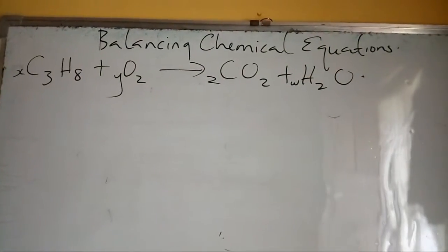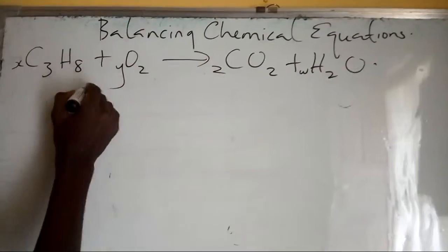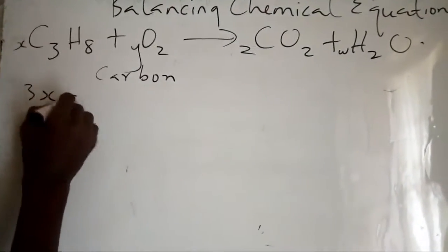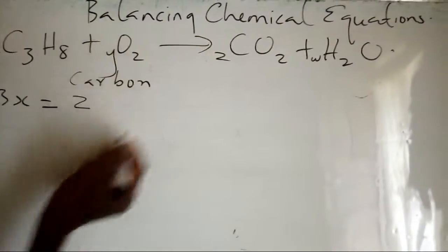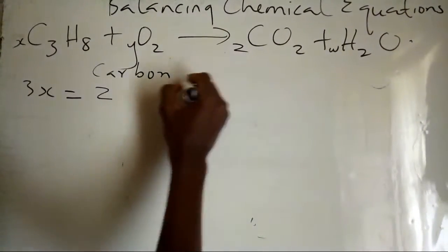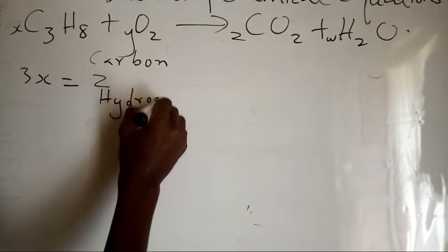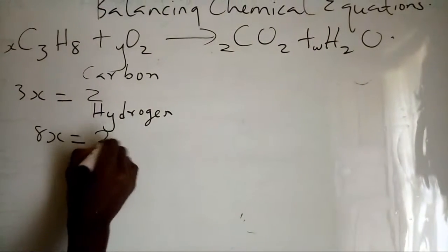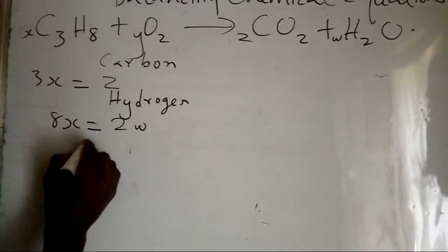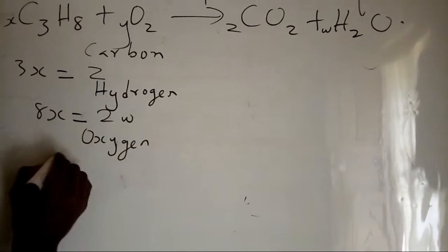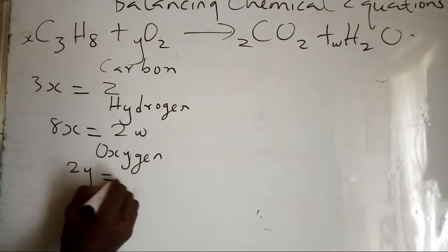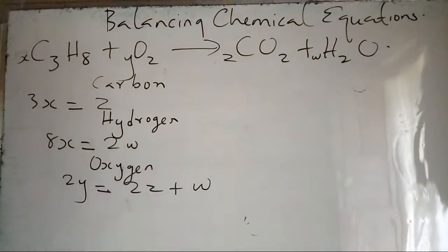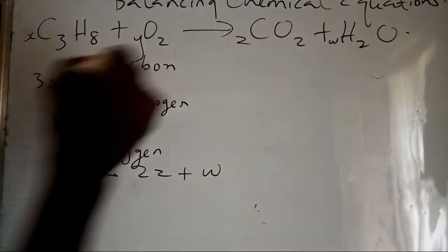For carbon: 3x is equal to z. For hydrogen: 8x is equal to 2w. For oxygen: 2y is equal to 2z plus w. Now you always set x equal to one.